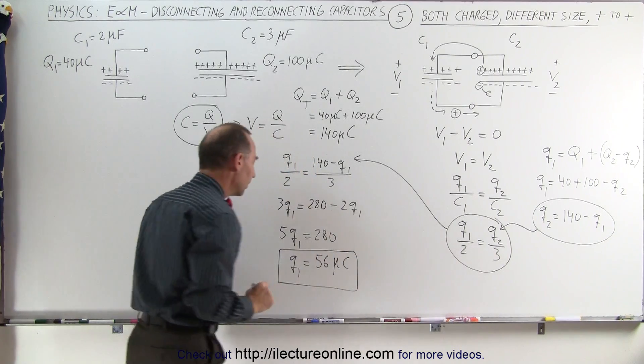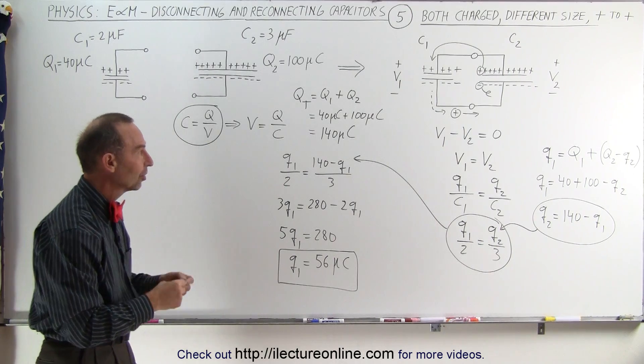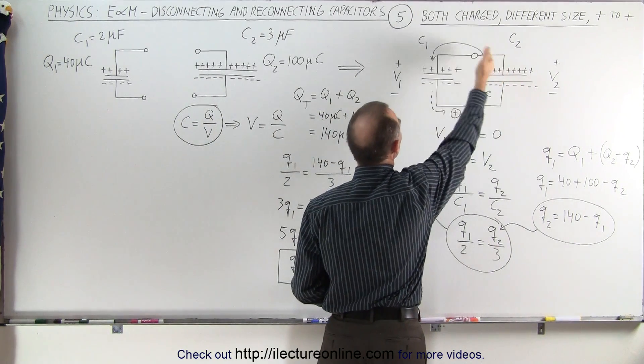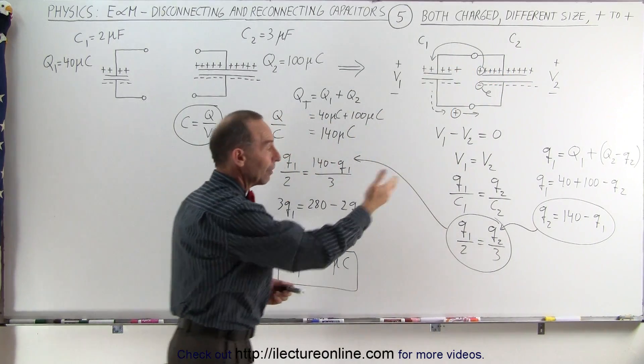So q1 is now known to have 56 microcoulombs on it when it's finished. That means it started with 40, and 16 additional microcoulombs migrated from C2 to C1.